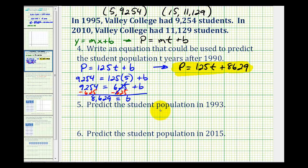For number five, we want to predict the student population in 1993. The only thing we'll have to remember here is that t would be the number of years after 1990. So for number five, t is going to be equal to three. So we'll substitute three for t into our prediction equation. So we'll have the population is going to be equal to 125 times 3 plus 8,629.